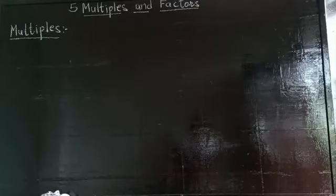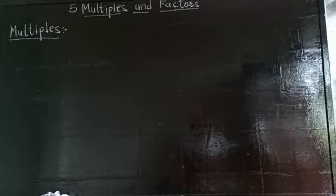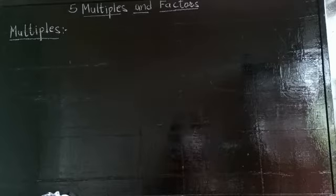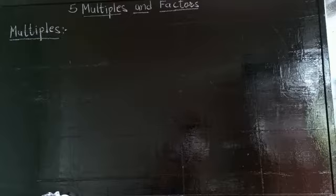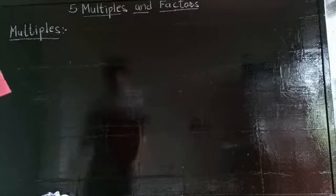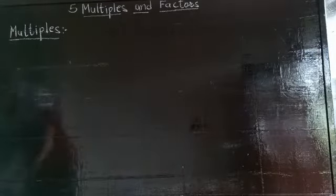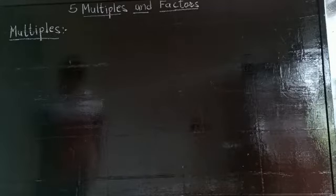Good morning, class 4. Today we are going to learn a new chapter - chapter number 5, that is Multiples and Factors. First we will deal with multiples. What are multiples? Multiples of a number are the numbers that are obtained by multiplying the given number with a counting number. When you multiply a given number, the answer that you get is the multiple.